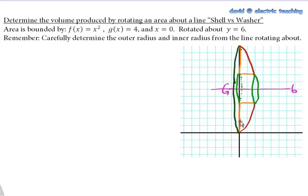So not just about an axis y or x, but about a line which changes the way the radius is. And that's why I always try to remind my students: carefully determine the outer radius and inner radius from the line rotating about. Okay, so from the line we're rotating about.